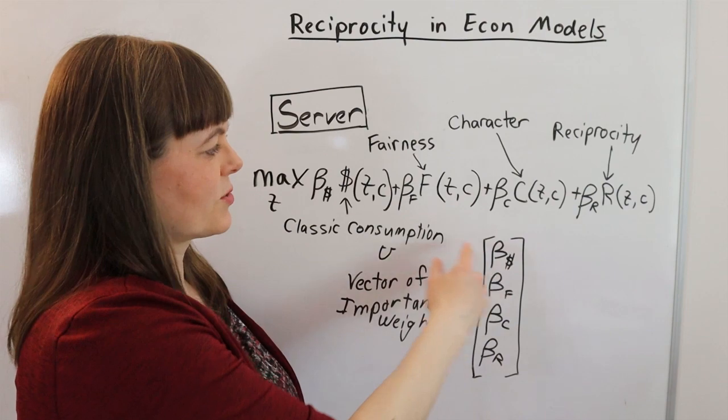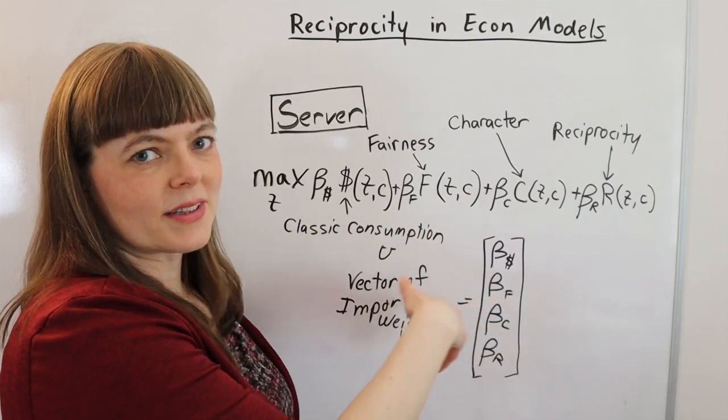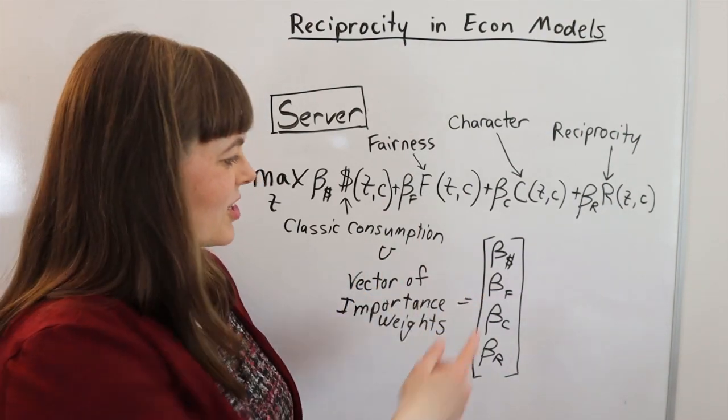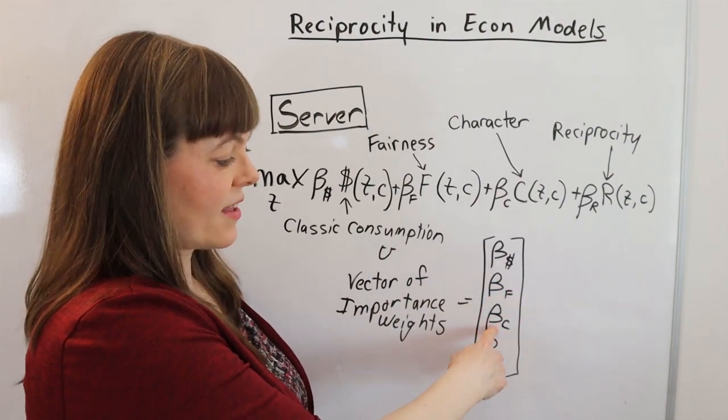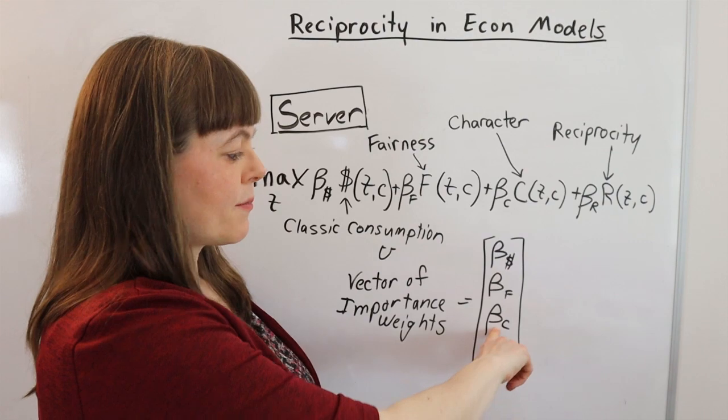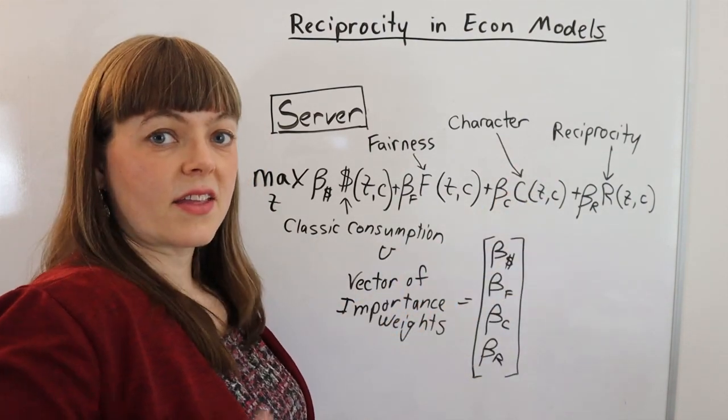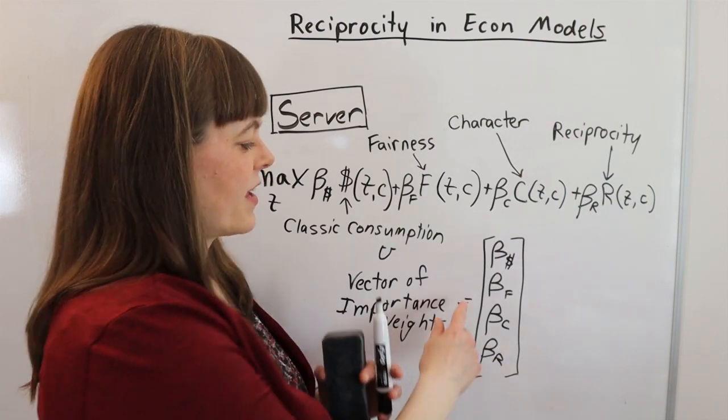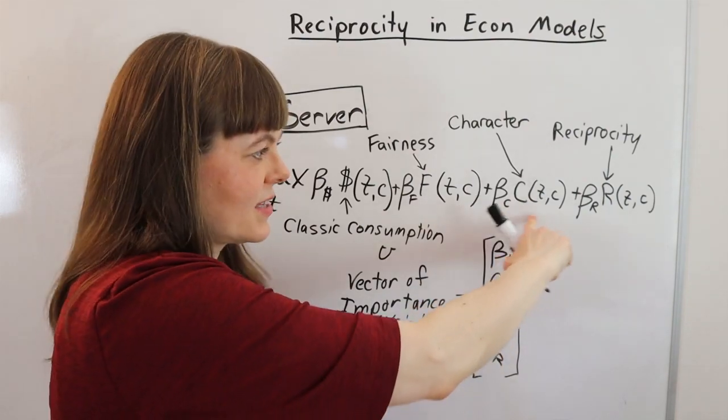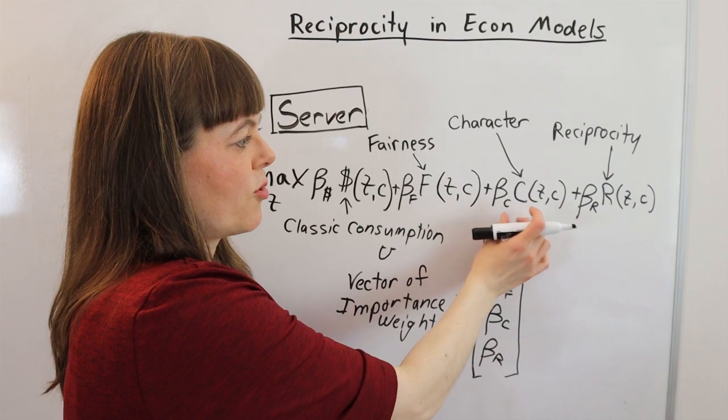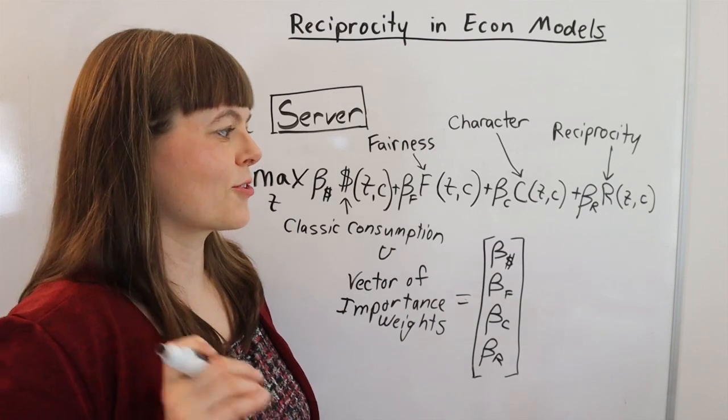Some people are going to have a heavy importance weight on the money or on the classic consumption utility. Some people, like Mary in Jane Austen's Persuasion, have a very heavy importance weight on fairness. And then some people, and I think this is a societal innovation, have a heavy importance weight on being nice to people regardless of whether or not they're nice to us. That's something they take pride in. And this is sort of like turn the other cheek. There's religions that are built around trying to make this term salient and make this importance weight bigger and bigger such that it's something you practice and something you feel on a regular basis.